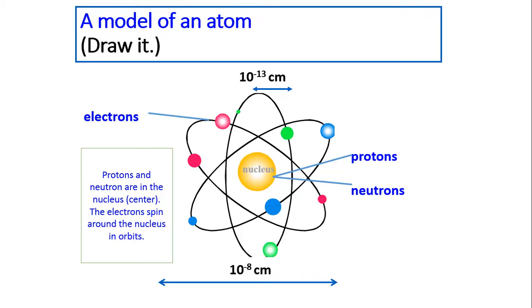In orbits flying around, circling the nucleus, we have electrons. Protons and neutrons are in the nucleus, the center. The electrons spin around the nucleus in orbits.